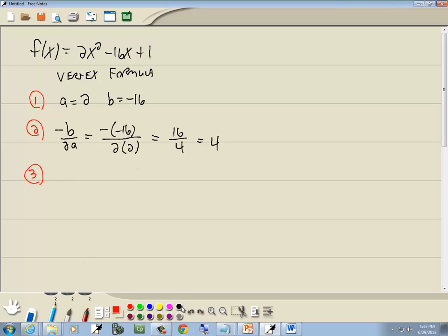Step 3, we then want to take that back and plug it back into our original function. So I got 2(4)² - 16(4) + 1. Everywhere I have an x, I put in 4, the number we found in step 2.